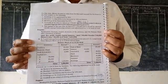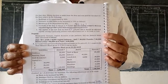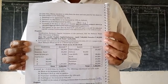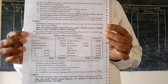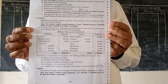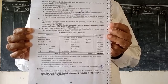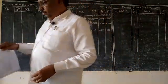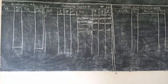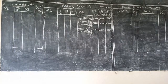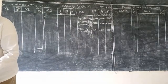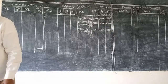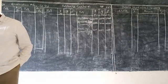Retirement of a partner, question on adjustment of capital, question number four from question bank. X, Y, and Z were partners sharing profit and losses in the ratio of 2 to 2 to 1 respectively. The balance sheet as on 31st March 2018 was as under.